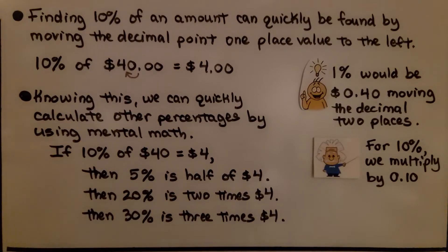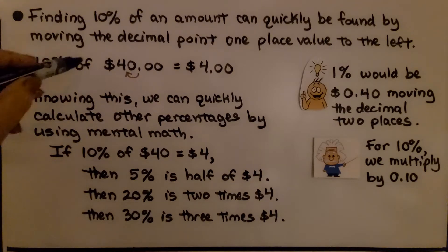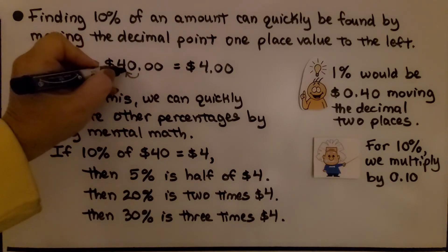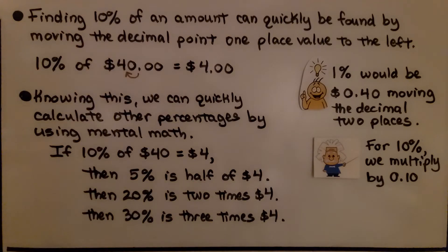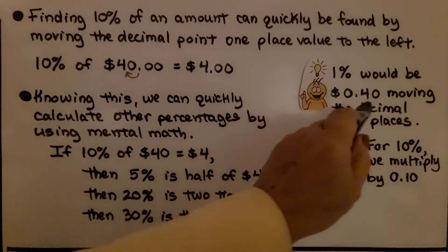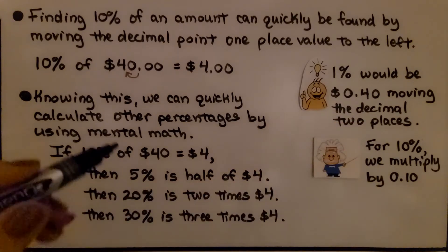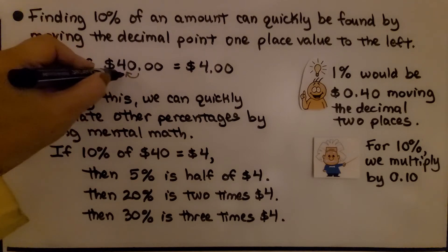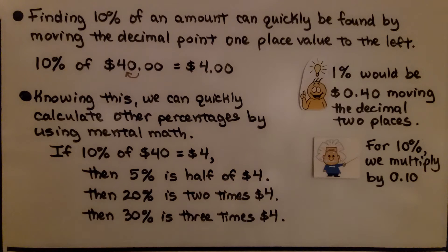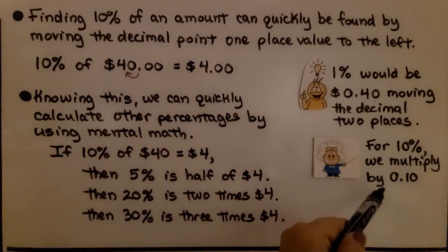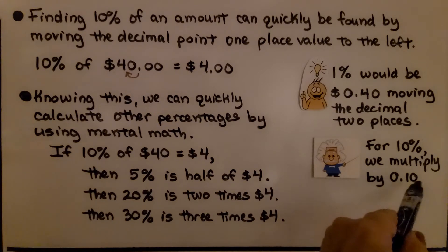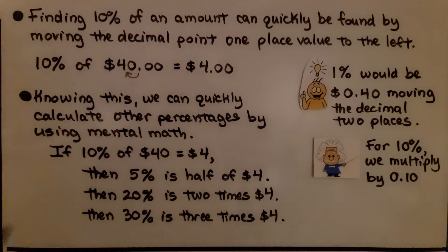Finding 10% of an amount can quickly be found by moving the decimal point one place value to the left. If we have 10% of $40, we move the decimal point one place to the left and get $4. And 1% would be $0.40, moving the decimal two places. We can also just multiply by 10% written as a decimal, but the decimal-moving shortcut is quick. Knowing this, we can quickly calculate other percentages using mental math.